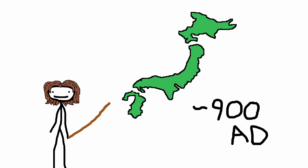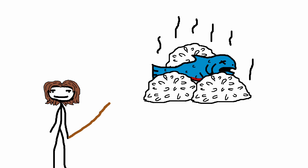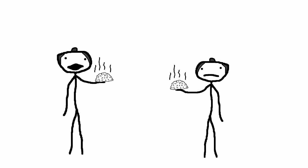Sushi first came into existence in Japan around the 8th century. It consisted of gutted salted fish stored in fermented rice.